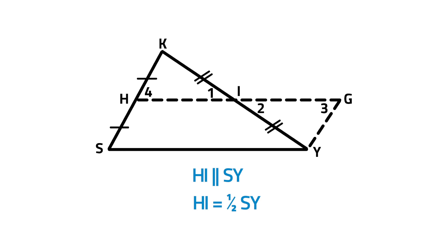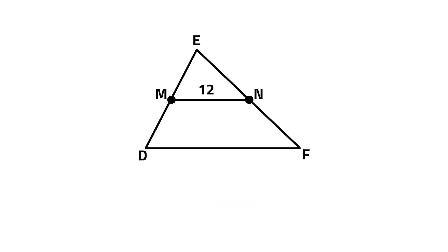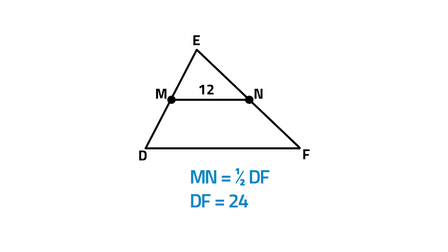Very good! Let's try another example. Given MN as a midpoint segment with MN equals 12, find DF. Segment MN is a mid-segment, so MN is equal to one half of DF. Since 12 is half of 24, therefore DF is equal to 24.